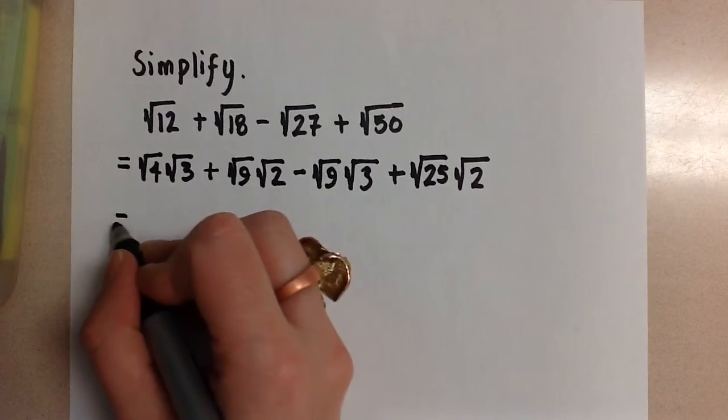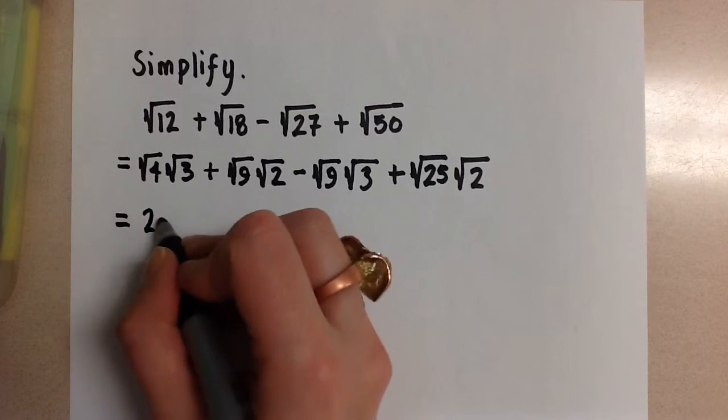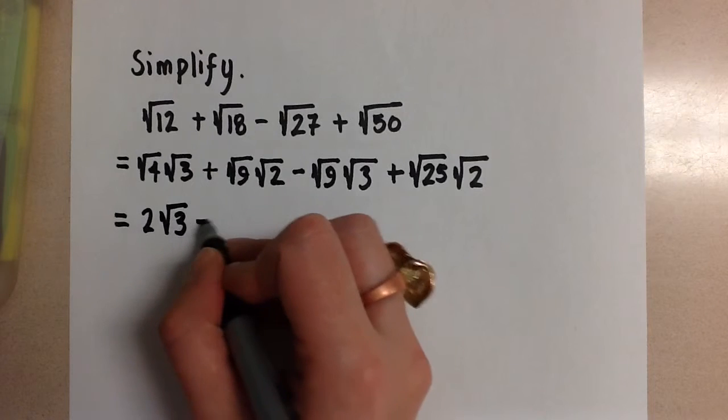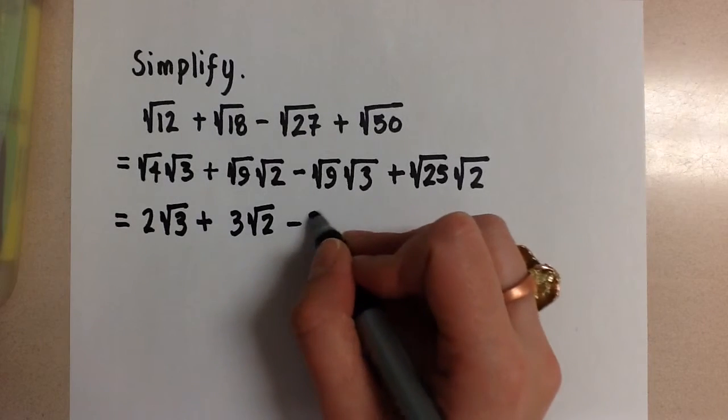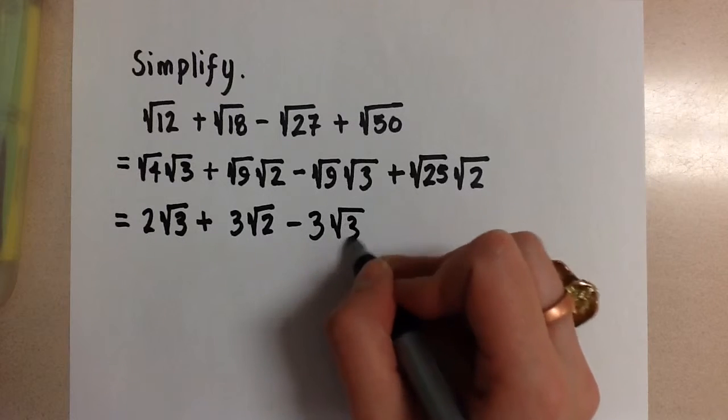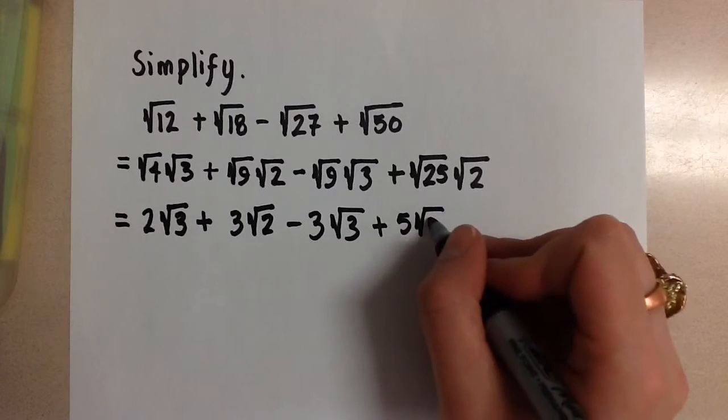So now we're going to go ahead and take the square root of all of the perfect squares. So 2 root 3 plus 3 root 2 minus 3 root 3 plus 5 root 2.